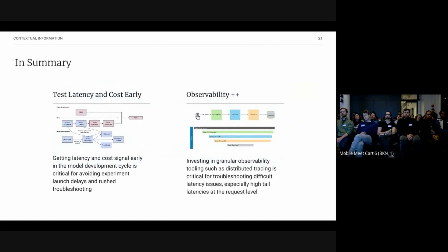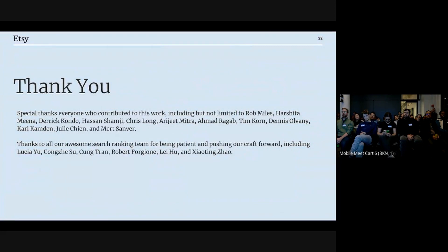In summary, test latency and cost early because you're going to have to troubleshoot it with deep learning. And observability is literally everything in production, even with ML. I can't stress enough how important it is to be able to identify problems before solving them. But yeah, I imagine I'm already over time. Special thanks to everyone who contributed in this work, and would love to open it up for questions if we have time for that. Thank you very much.